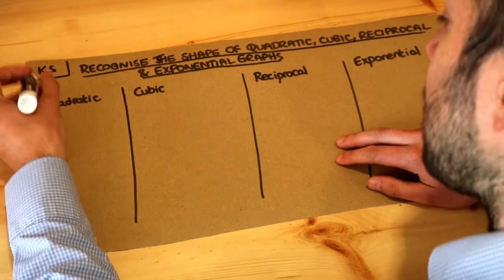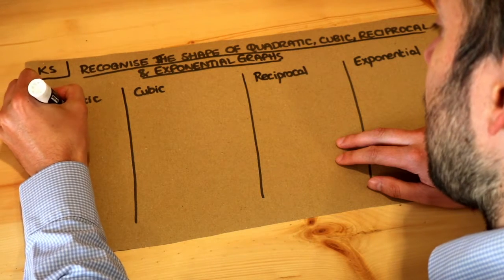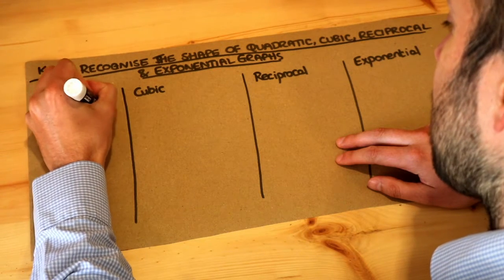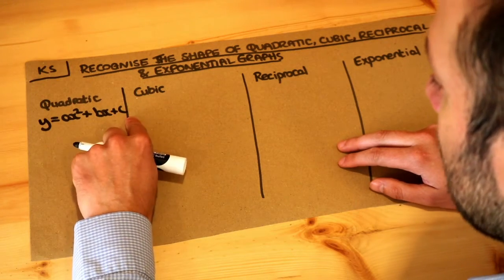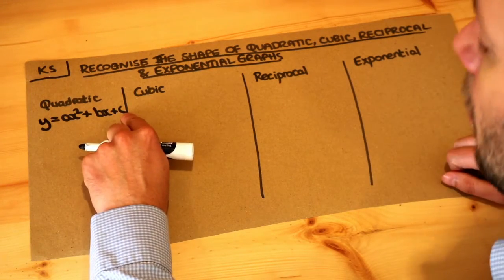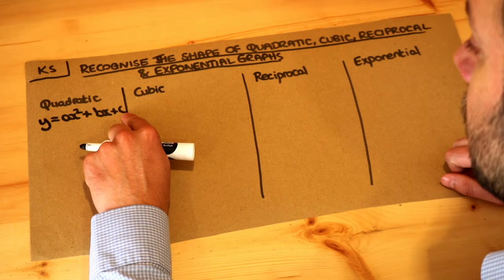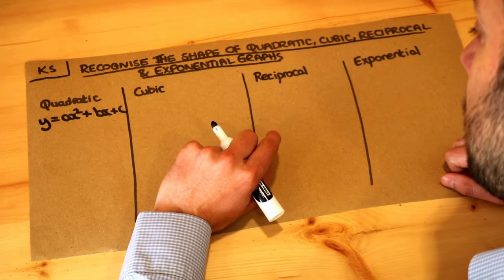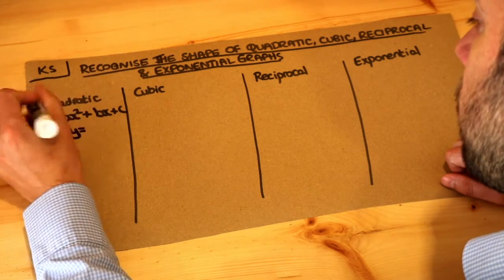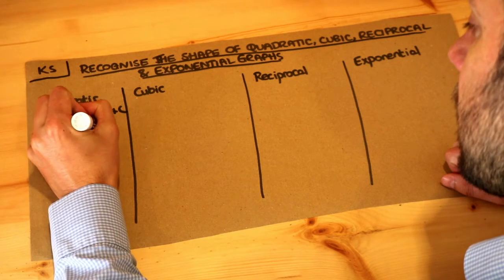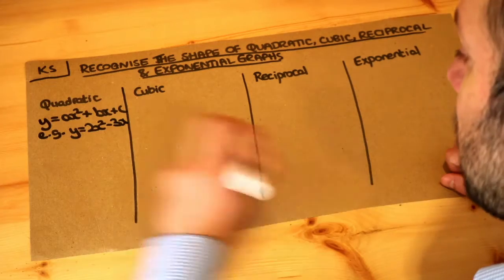So let's take quadratics first. A quadratic equation looks something like y equals ax squared plus bx plus c, so it has an x squared term, possibly an x term, and possibly a constant term. Remember a constant term is just a term which doesn't have a variable in it, so it could just be like plus 3 for example. So an example would be y equals 2x squared minus 3x.